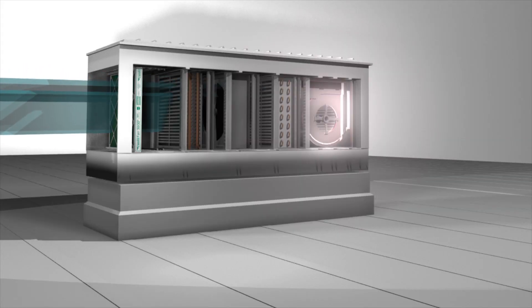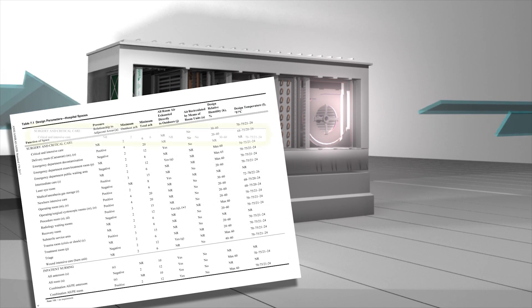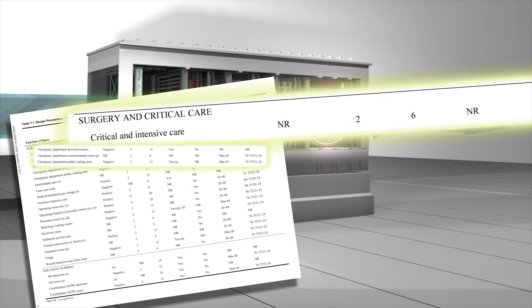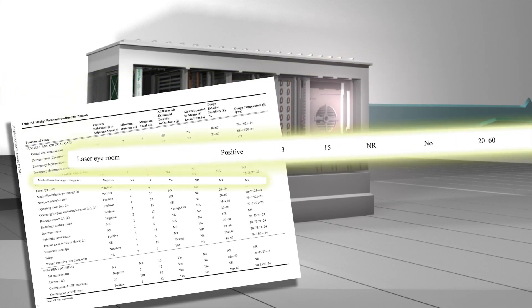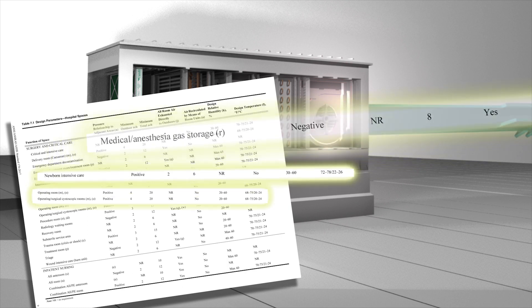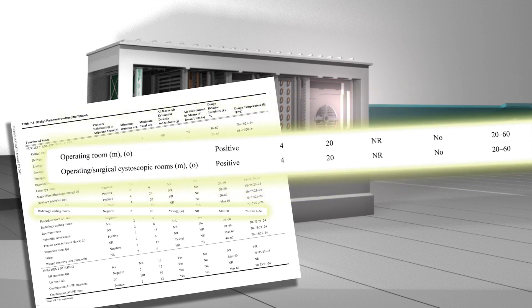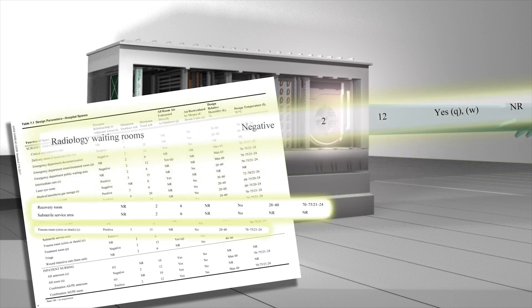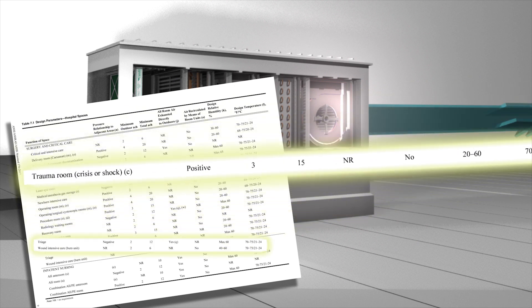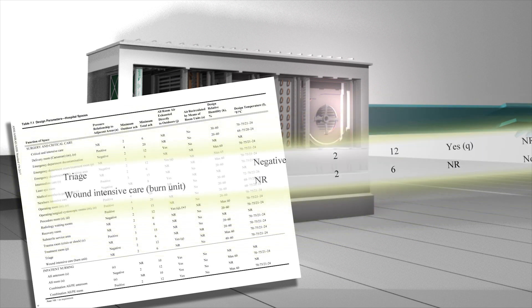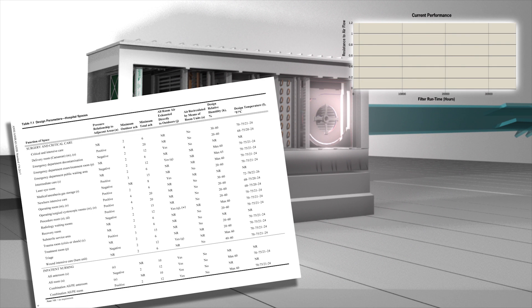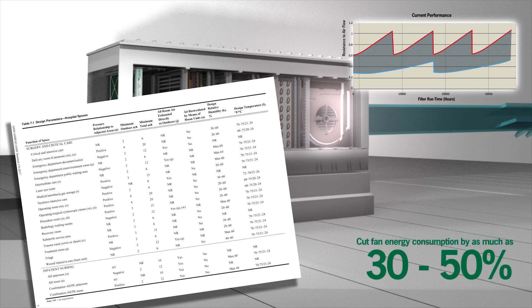The latest Standard 170 also allows for saving energy by reducing air changes per hour in designated spaces. The standard's Table 7.1 identifies energy savings design parameters, and fan performance in a system plays a big part in the savings. Fan energy related to air filtration makes up a large percent of total energy spend in a hospital, and optimizing air filtration selection and change-out points can cut fan energy consumption by as much as 30 to 50 percent.